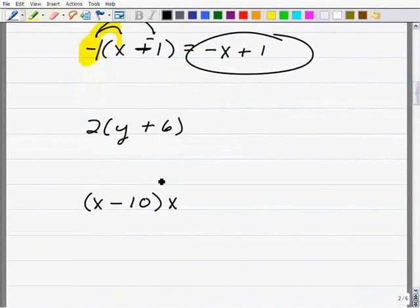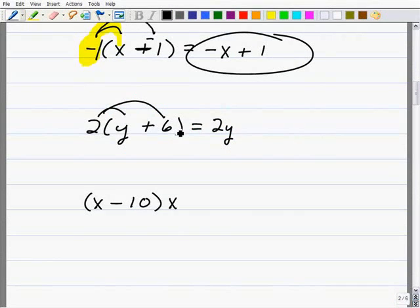Let's take a look at these last two problems. Hopefully these are pretty easy now. 2 times y, 2y, plus 2 times 6. 2 times 6 is 12. At this point, there's nothing more you can do. This is as simplified as you can go. You can't add 2y plus 12. We're going to be talking about in later videos how to combine like terms and what that means, but just take it from me that this is as simple as this can go.